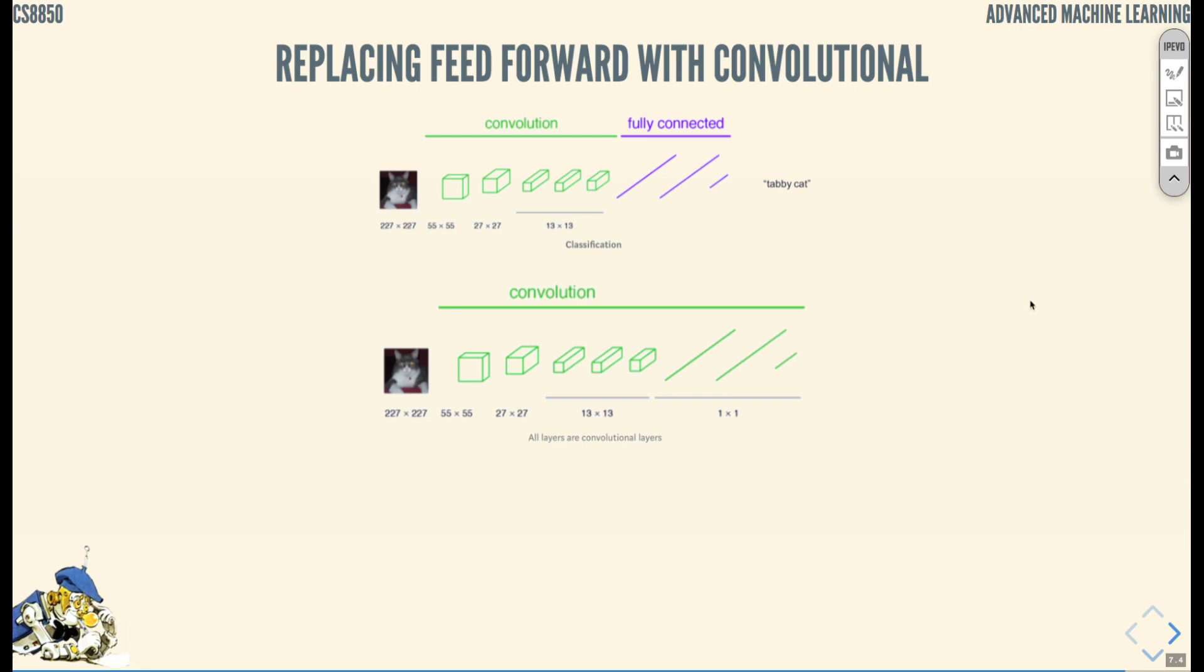But for the task of semantic segmentation, what do we do? We need up-sampling. Up-sampling is the up-convolution that we spoke about in one of the previous lectures.